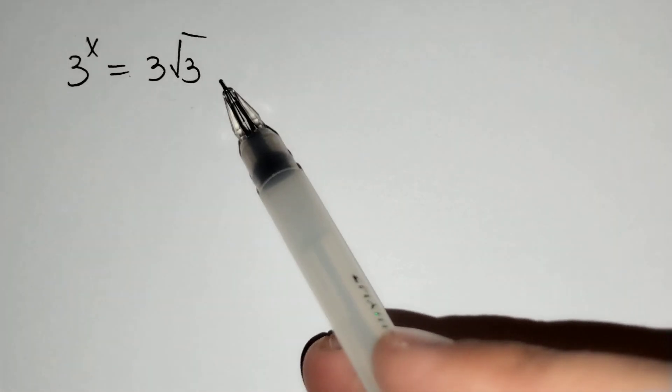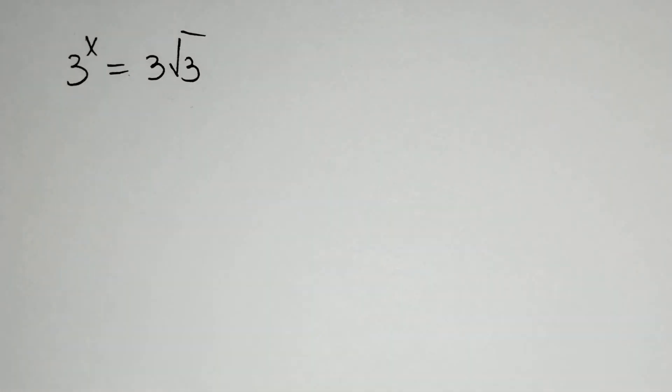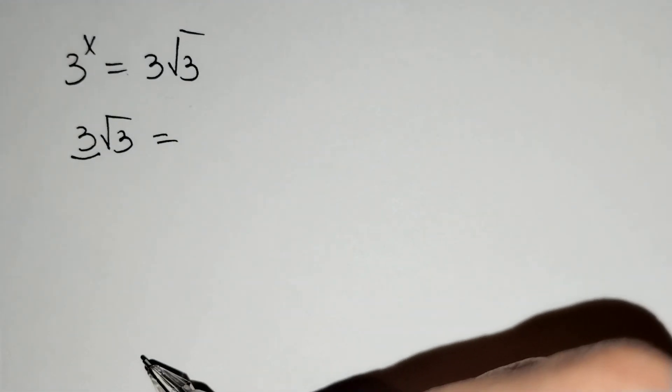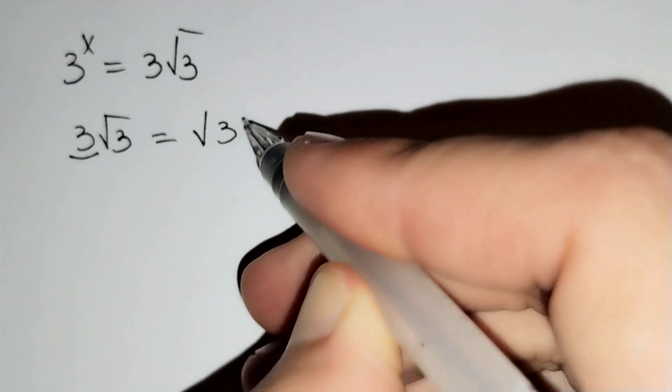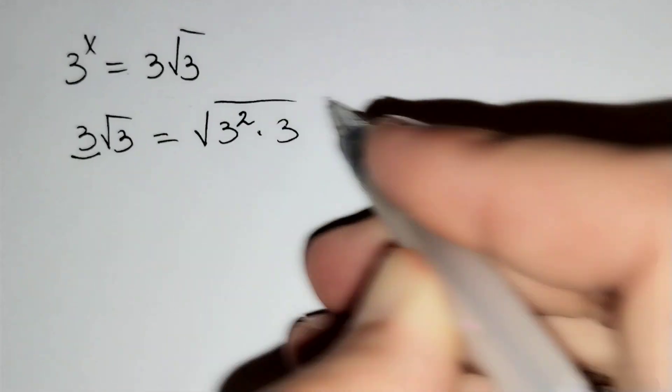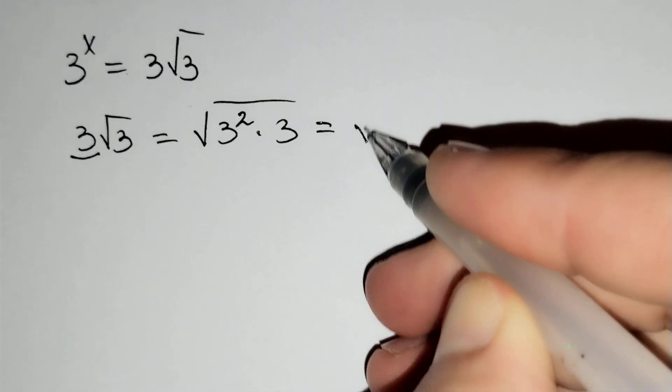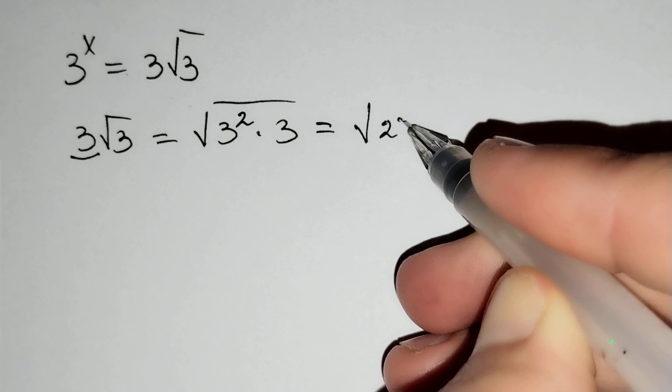Firstly we should find 3 times the square root of 3. This equals the square root of 3 squared times 3, which is equal to the square root of 27.